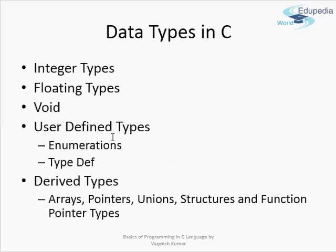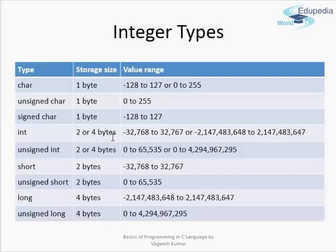Now, data types in C. The data types include integer types, floating types, void, user-defined types such as enumerations and typedef, and derived types like arrays, pointers, union structures, and function pointer types. We will discuss them in a little more detail.